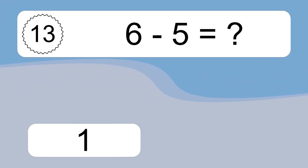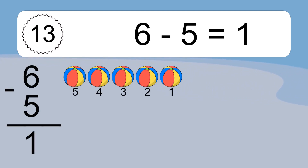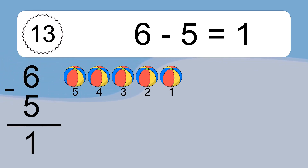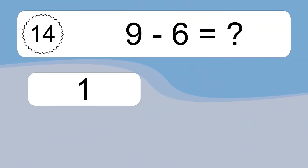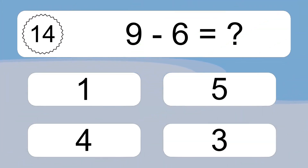6 minus 5 equals what? 6 minus 5 equals 1. Let's count it. 5, 4, 3, 2, 1.